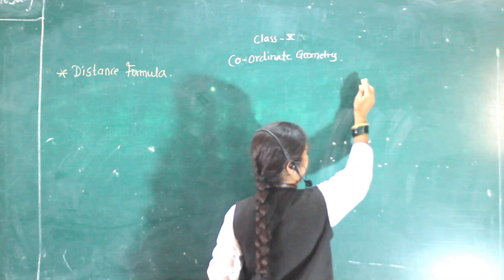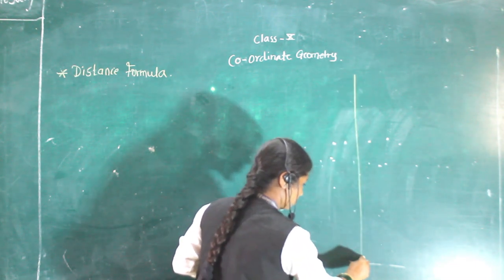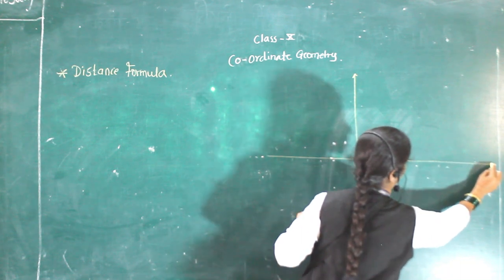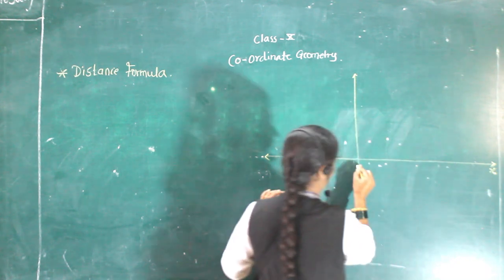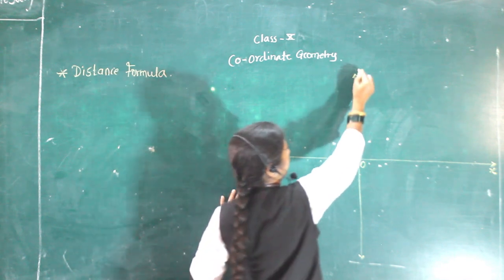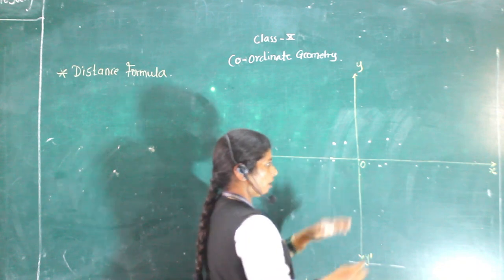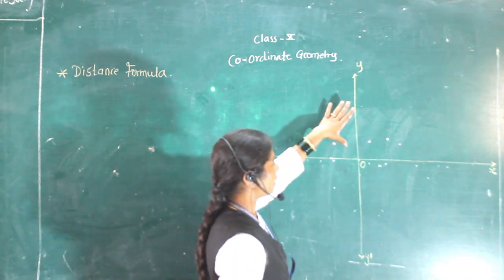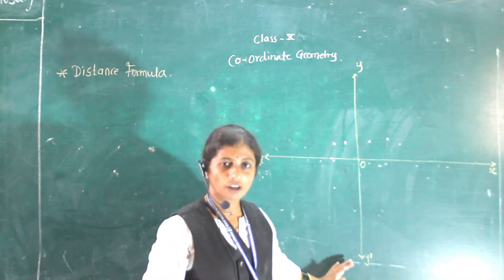Suppose this is your x-axis and y-axis, which are perpendicular axes. We know that all positive x-values are here and all negative x-values are here. Similarly, all positive values of y are here and all negative values of y are here.